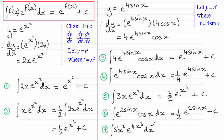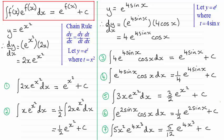For this last one, differentiating 4x cubed gives 12x squared. I need the constant 5 but not the 12 I created, so I divide it out by putting 5 twelfths at the front. Then I have my exponential function e to the power 4x cubed, plus c. I hope that gives you some idea of how to handle this type of integral.